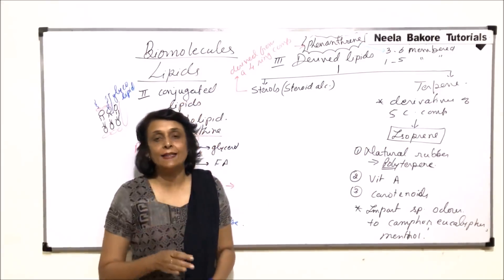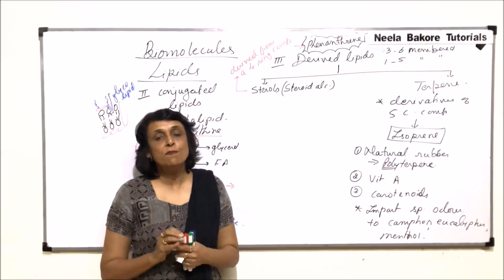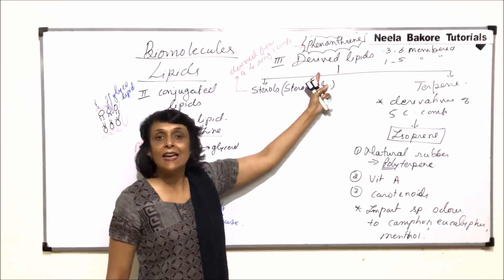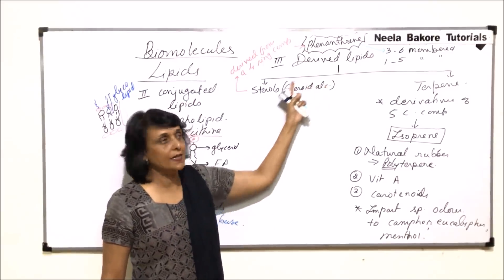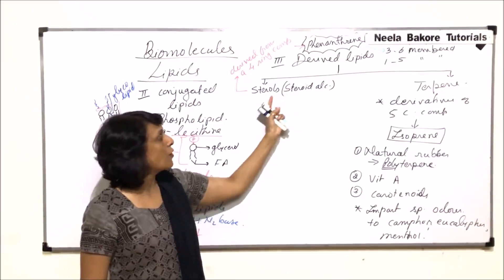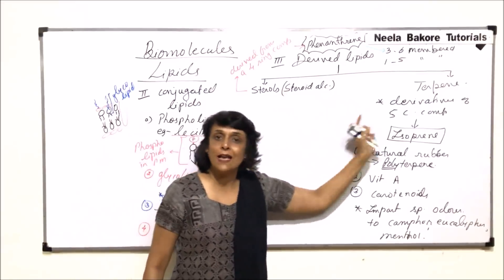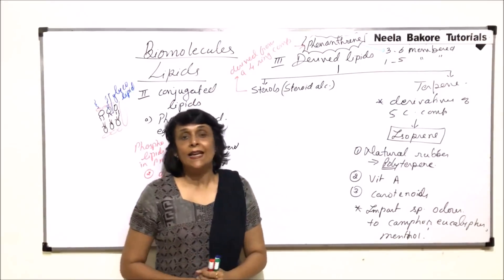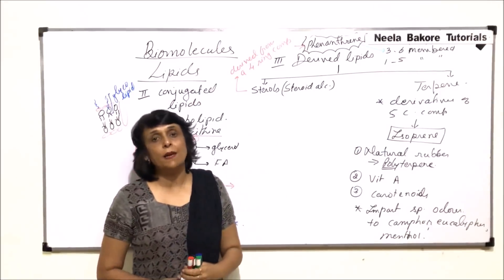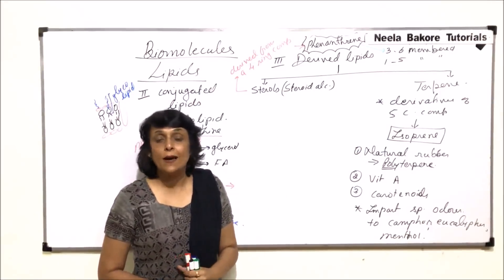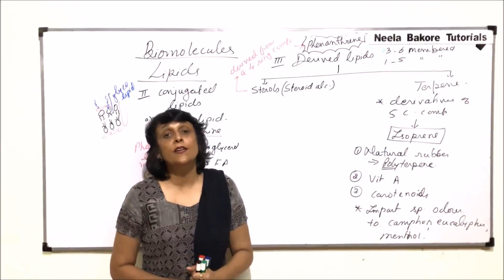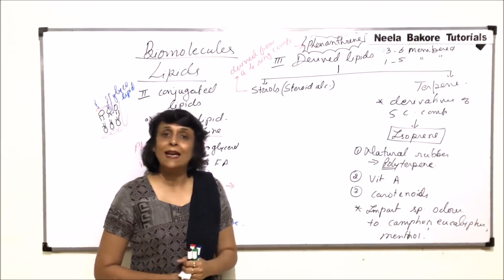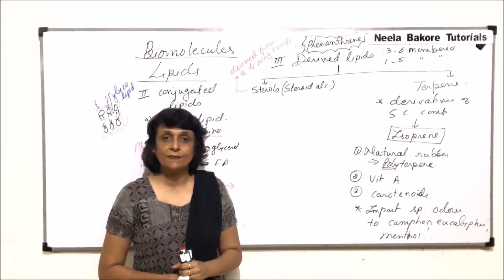With this, the complete classification of lipids is done. We have covered three categories: simple lipids, conjugated lipids, and derived lipids. In derived lipids we discussed sterols as well as terpenes. In the next segment, we will start with nucleotides and then nucleic acids.